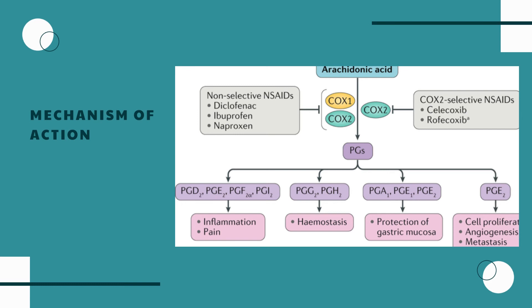Aceclofenac reduces neutrophil adhesion to the endothelium by reducing the expression of L-selectin (CD62L), a cell adhesion molecule. Aceclofenac is proposed to stimulate glycosaminoglycan synthesis in human palm cartilage through its inhibitory activity on IL-1 beta production and activity. The articular cartilage protective effects are produced by 4-hydroxy-aceclofenac, which blocks the IL-1 mediated production of matrix metalloproteinase-1 and metalloproteinase-3, and the release of proteoglycans from chondrocytes.